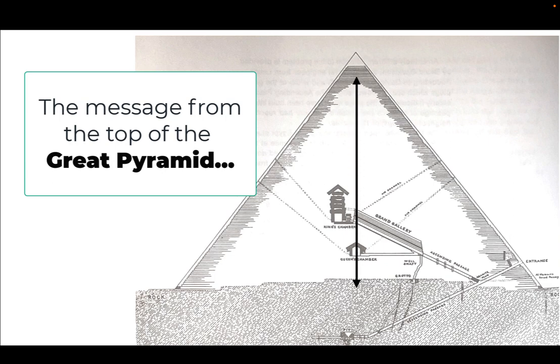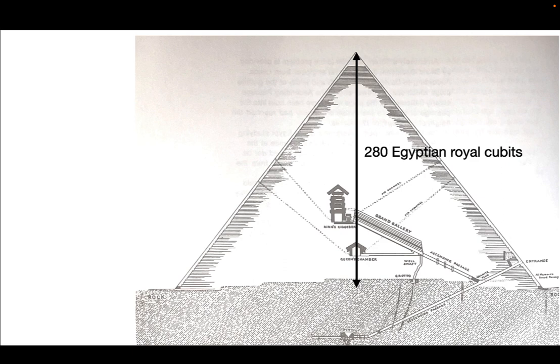Okay, the Great Pyramid seems to have been intended to be 280 royal cubits, but we don't have that topstone on there now. But that seems to be the intended height.